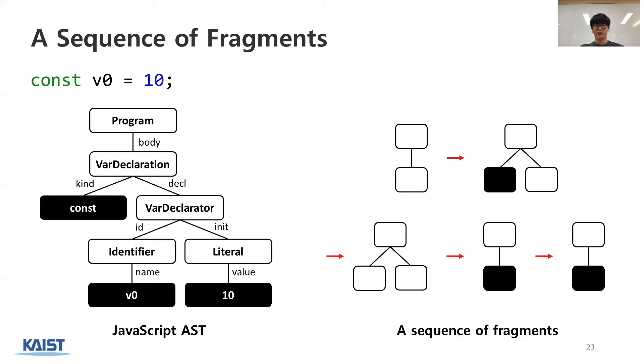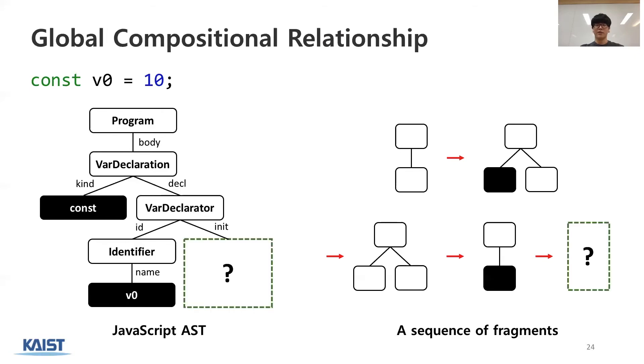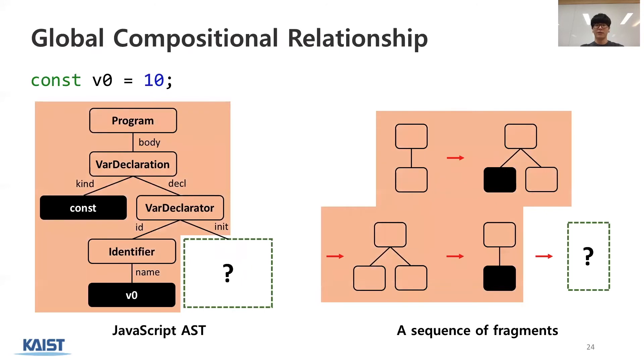So, why is this modeling novel? Let's assume that we want to predict the next fragment. Then, starting from the root node, this representation enables modeling the global compositional relationship between fragments. In other words, Montage can predict the next fragment based on all the preceding fragments.